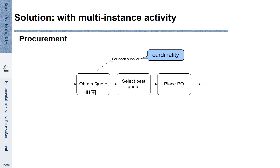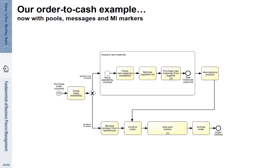The cardinality is not explicitly shown here — it says 'for each supplier.' We might also want to represent that we want to obtain a quote from 5 out of 10 suppliers; this can also be represented. Let's have a look at a more complex example. Remember the order-to-cash process used in various earlier examples — a similar line of reasoning can be applied.